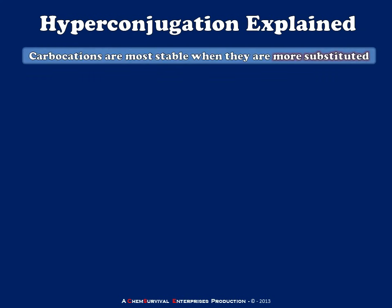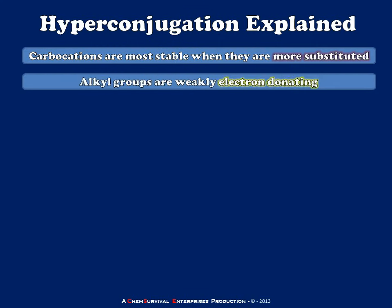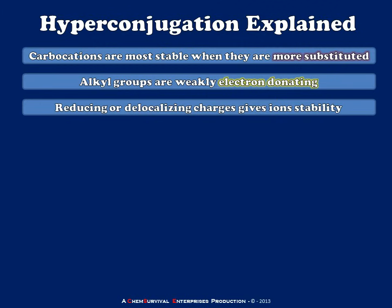So carbocations are most stable when they're more substituted. We know this from our lecture course. And we also know that alkyl groups are weakly electron donating, and that's the mechanism by which they stabilize carbocations. Because reducing or delocalizing charges in small organics gives those ions greater stability.